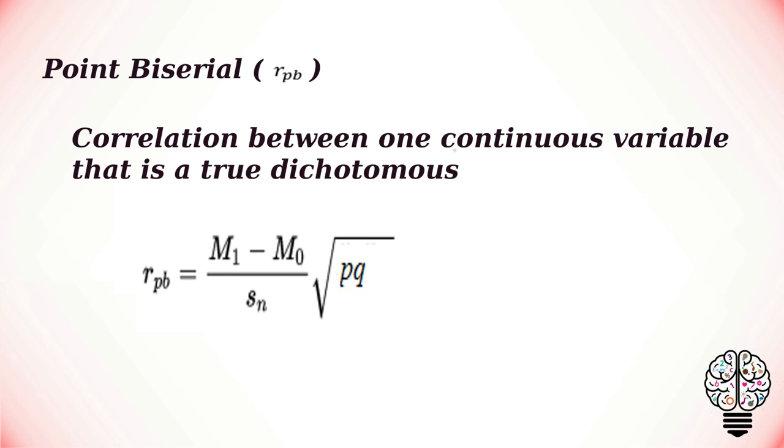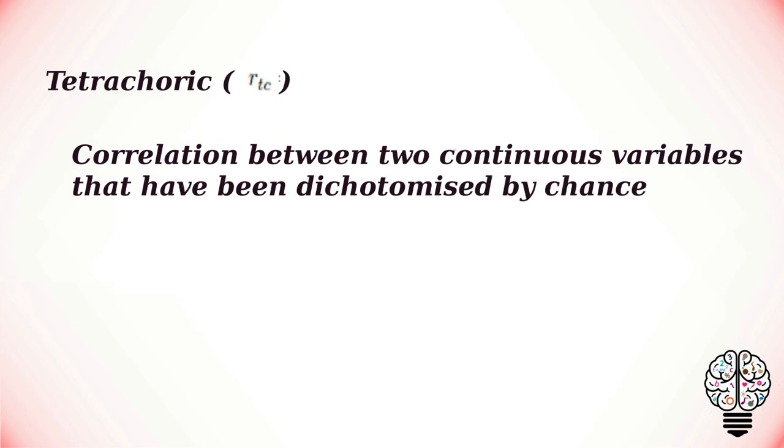The next one is tetrachoric correlation, that is correlation between two continuous variables that have been dichotomized by chance. For example, correlation of tall versus short with pass versus fail in a physical fitness test. Another example is correlation between pass or fail in an exam and good or poor student. The formula for tetrachoric correlation is as follows.